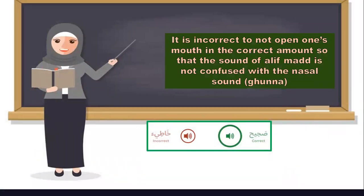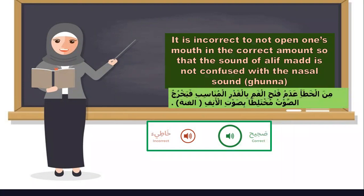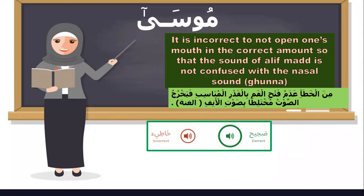Number one: it is incorrect to not open one's mouth in the correct amount, so that the sound of al-alif mad is confused with the nested tongue — bunna. You should open your mouth. Like 'mu-sa' — the correct pronunciation is 'mu-sa.' The wrong pronunciation, if you don't open your mouth, will sound like 'mu-si.' That's wrong.